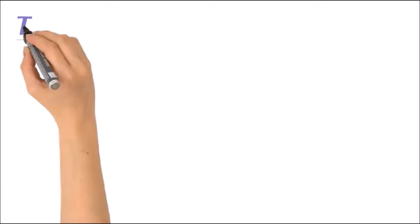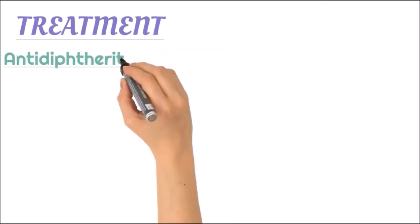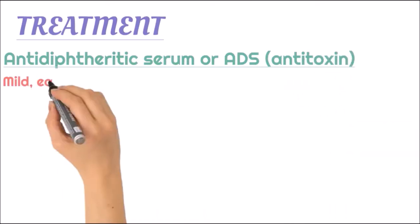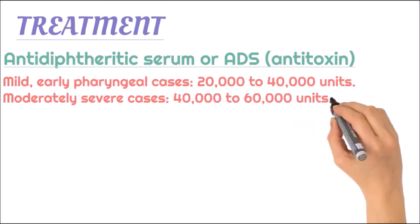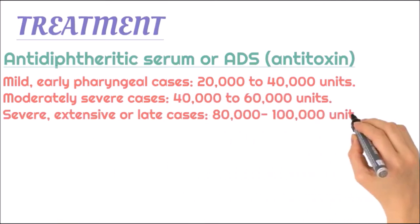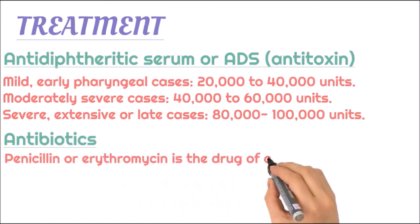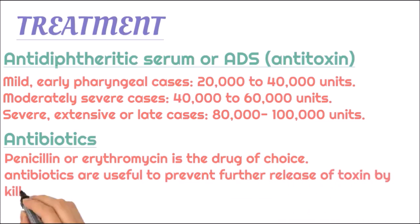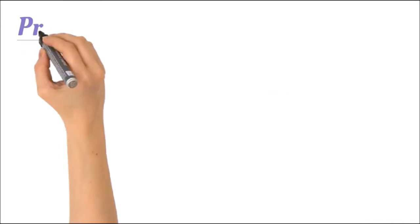For treatment, we use anti-diphtheritic serum or antitoxin. In mild cases, 20,000 to 40,000 units are given; in moderate cases, 40,000 to 60,000 units; and in severe cases, 80,000 to 1 lakh units. Antibiotics like penicillin or erythromycin are the drugs of choice, and are useful to prevent further release of toxin and to kill the bacilli in cases of cutaneous diphtheria.